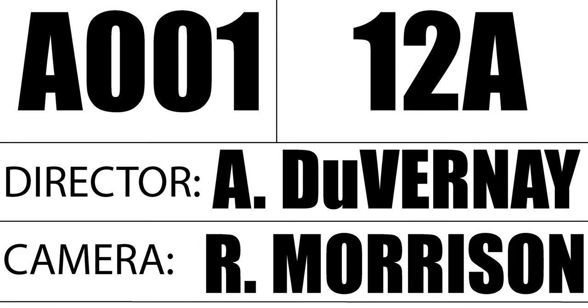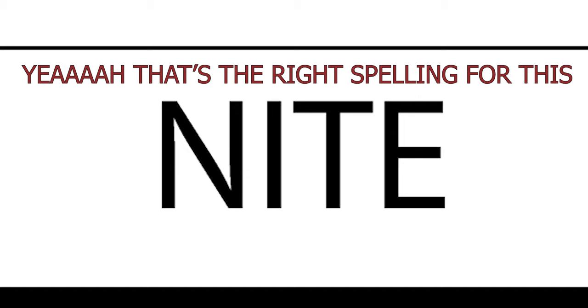Underneath all of that, you'll have the director and the camera. Camera will be the DP's name and director will be the director's name — pretty simple. And then underneath everything, you'll have the date. Next to that, you'll also have three things on the slate: day, night, and MOS.